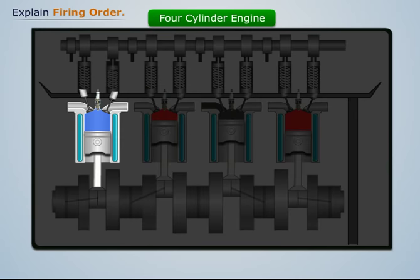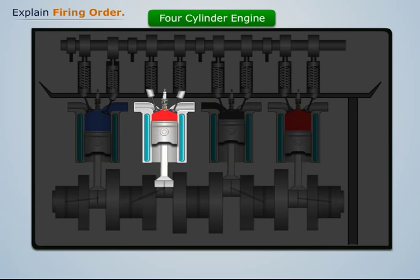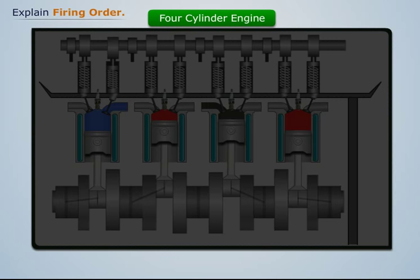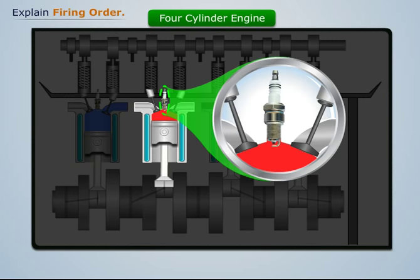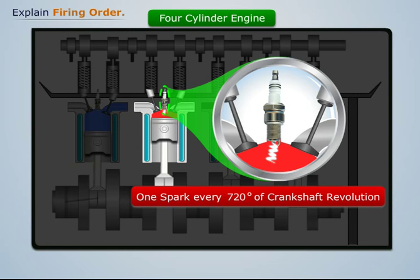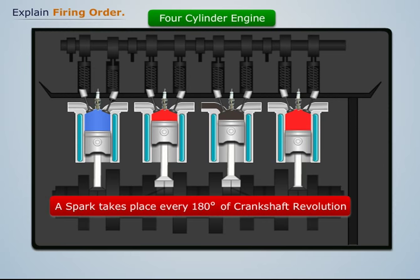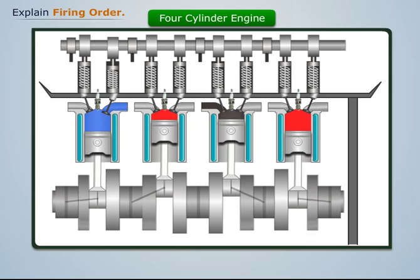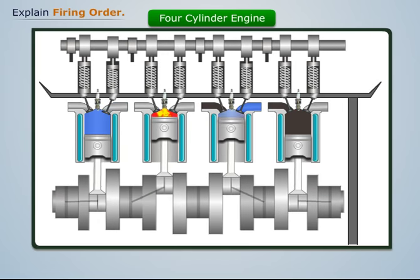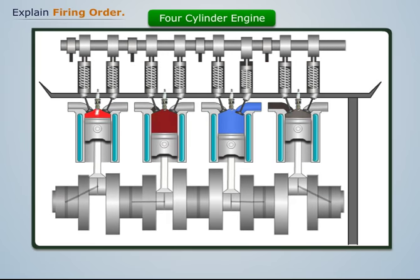We know that the cylinders get sparked one by one, and each cylinder requires a spark in every 720 degrees of crankshaft revolution. So we can say that a spark takes place in every 180 degrees of crankshaft revolution. The order in which the cylinders are sparked is called firing order.